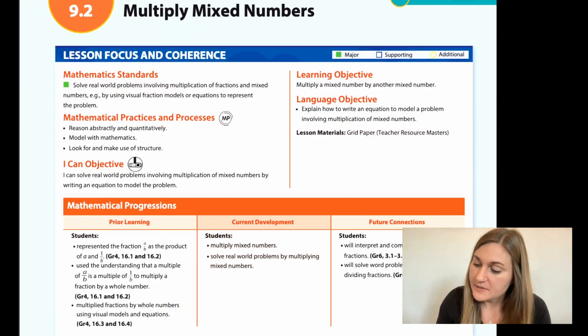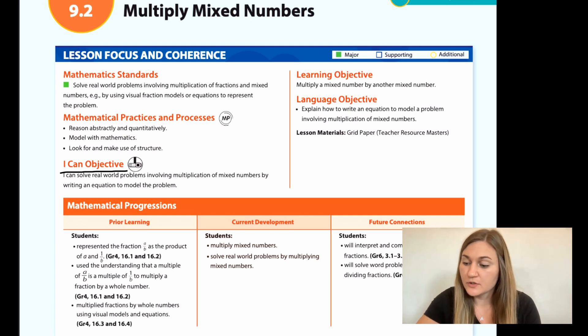Hi, I'm Natalie Rhodes and this is Into Maths, 5th grade, Module 9, Lesson 2. I'm going to start off by going over the I Can Objective. It says, I can solve real-world problems involving multiplication of mixed numbers by writing an equation to model the problem. And the learning objective is to multiply a mixed number by another mixed number.